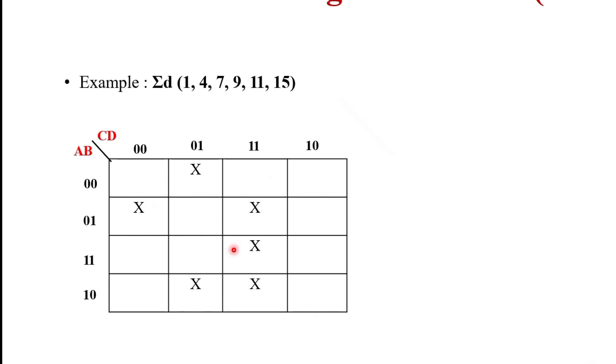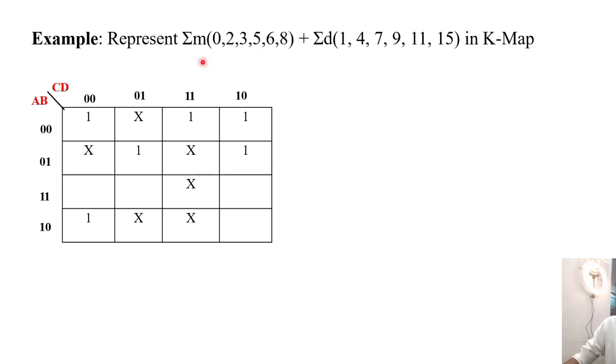Example: represent Σm(0,2,3,5,6,8) plus ΣD(1,4,7,9,11,15). You should represent them in K-map. First, place all the ones as we do in SOP. Place the one in these positions: 0, then 2, 3, then 5, 6, and 8.